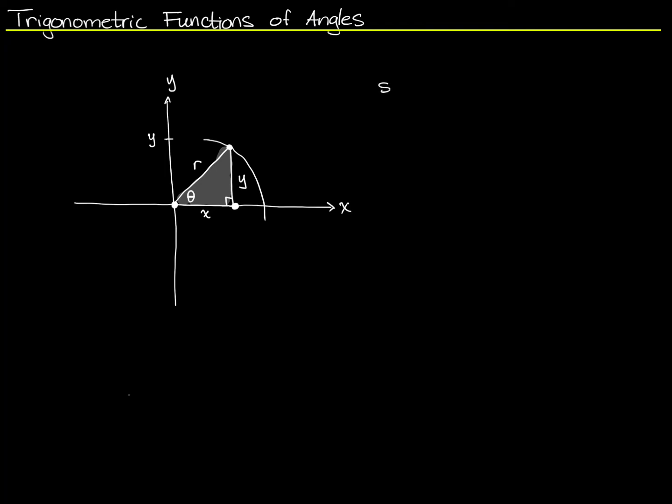Now, with that information, I can say that the sine of θ, it's opposite over hypotenuse, but now that's Y over R. And the cosine of θ is adjacent, which is X over R. If I multiply both sides by R, I get R sine of θ equals Y, and R cosine of θ equals X.